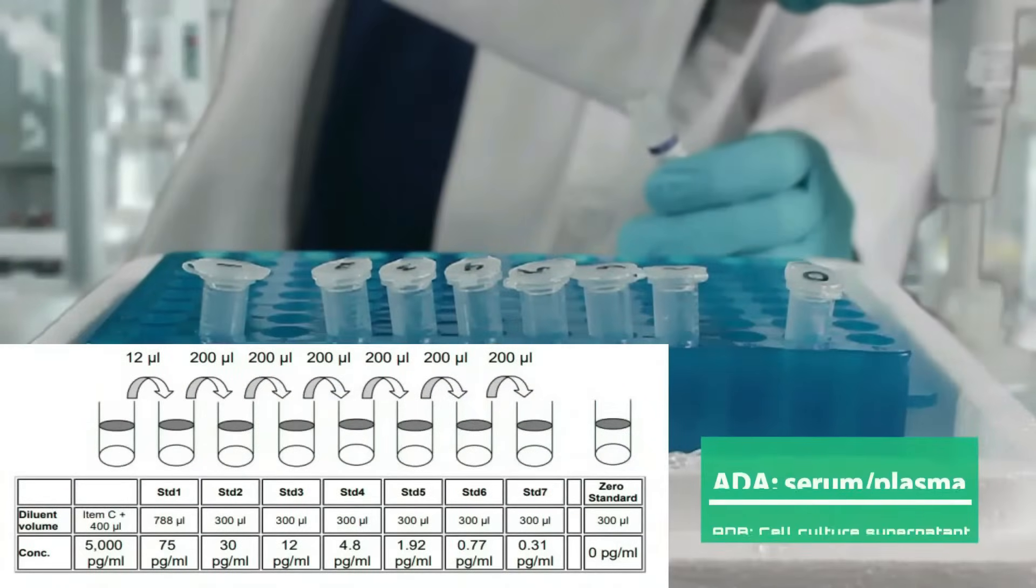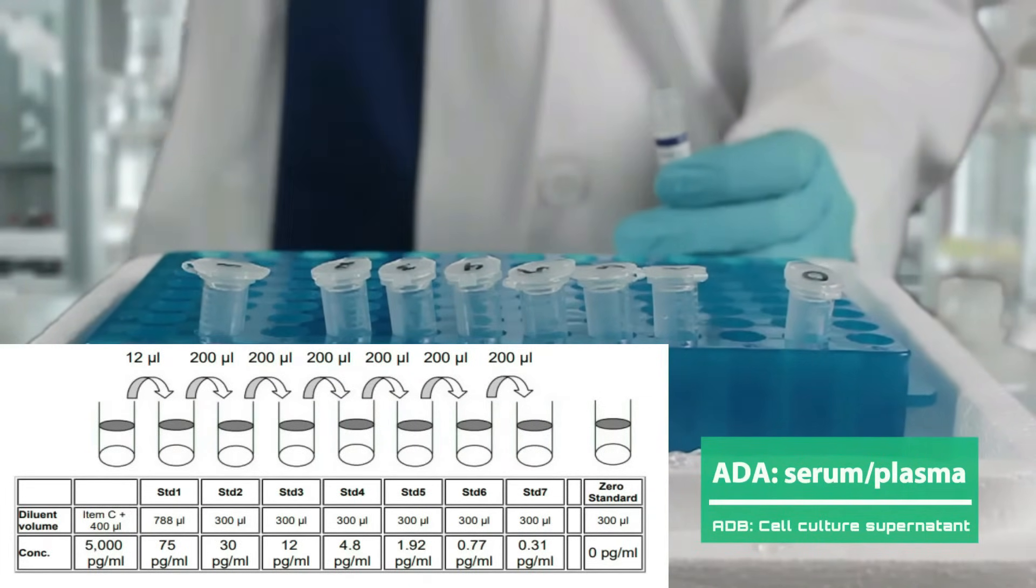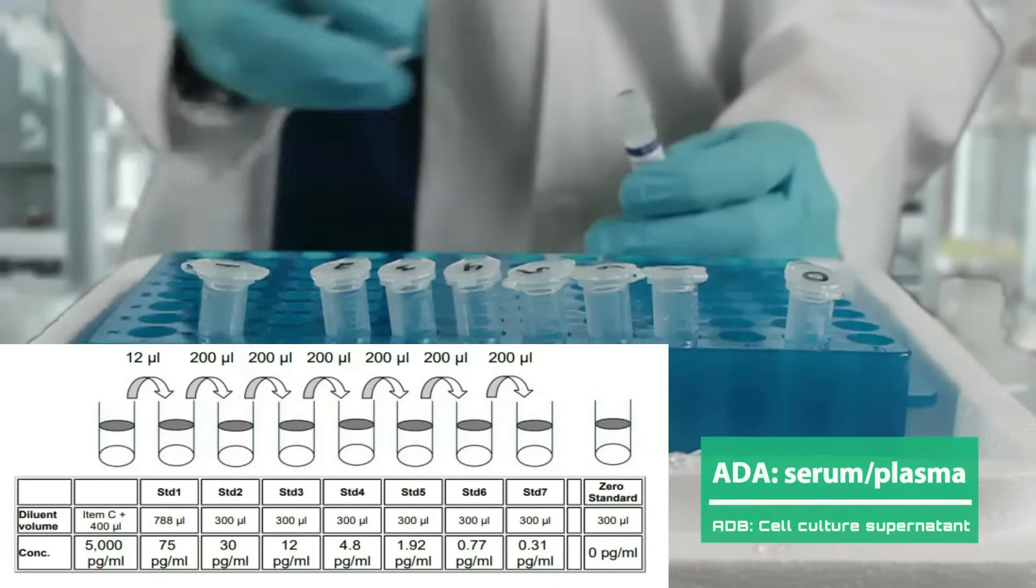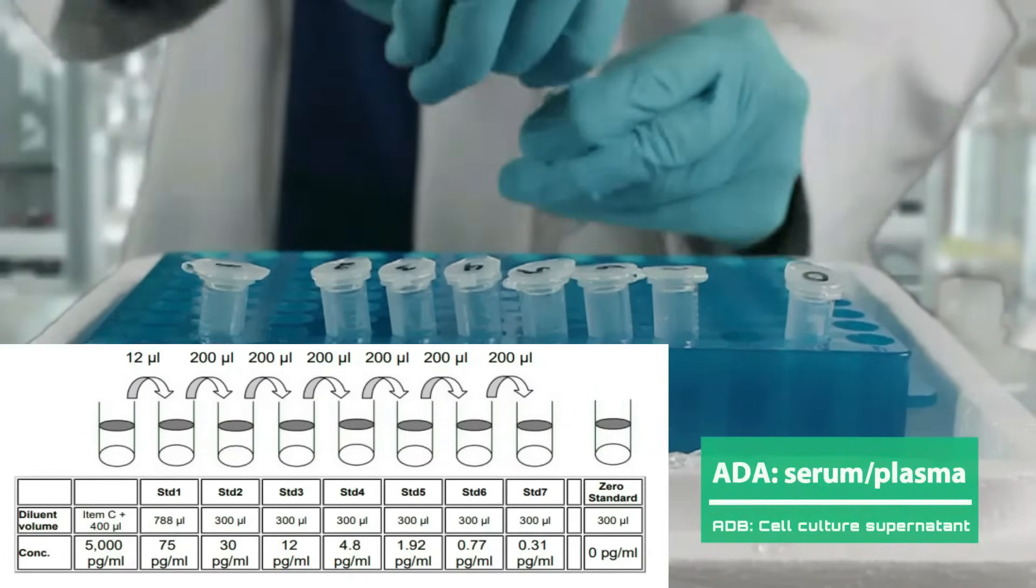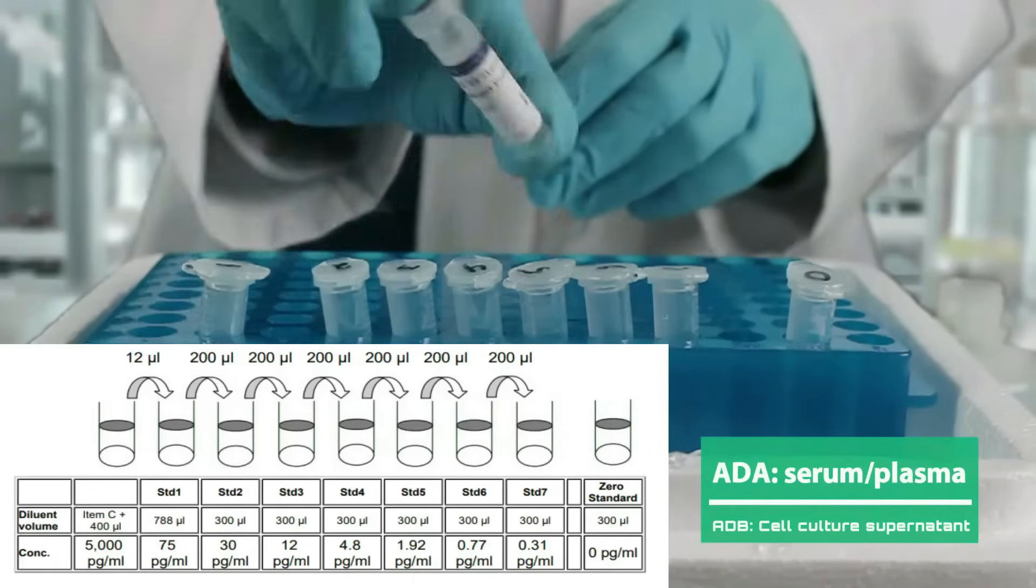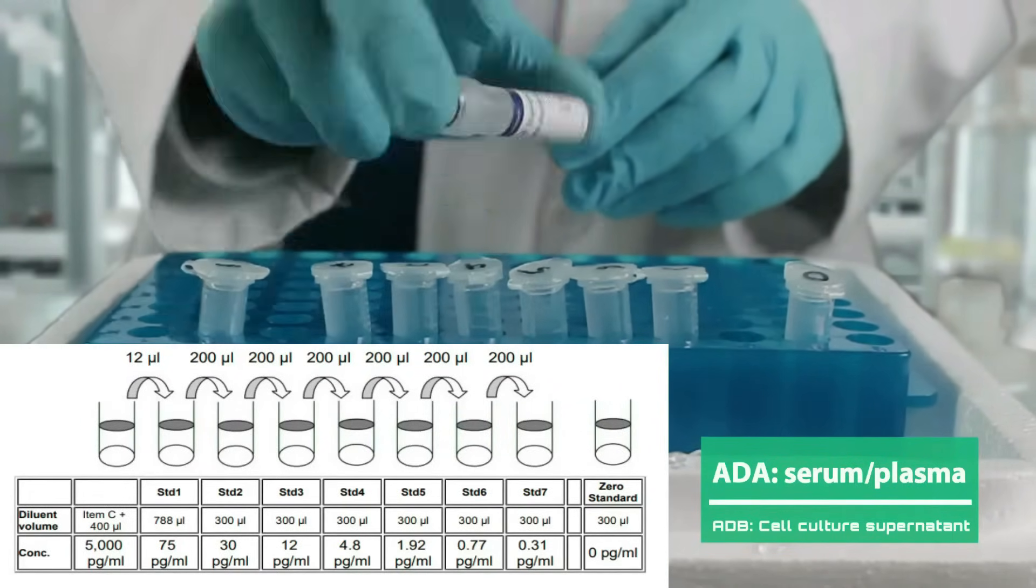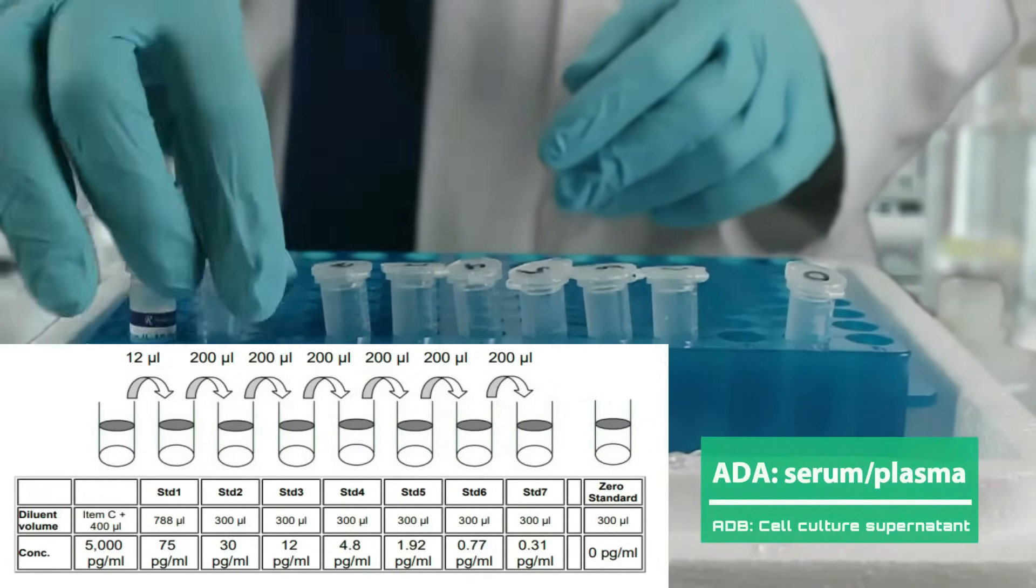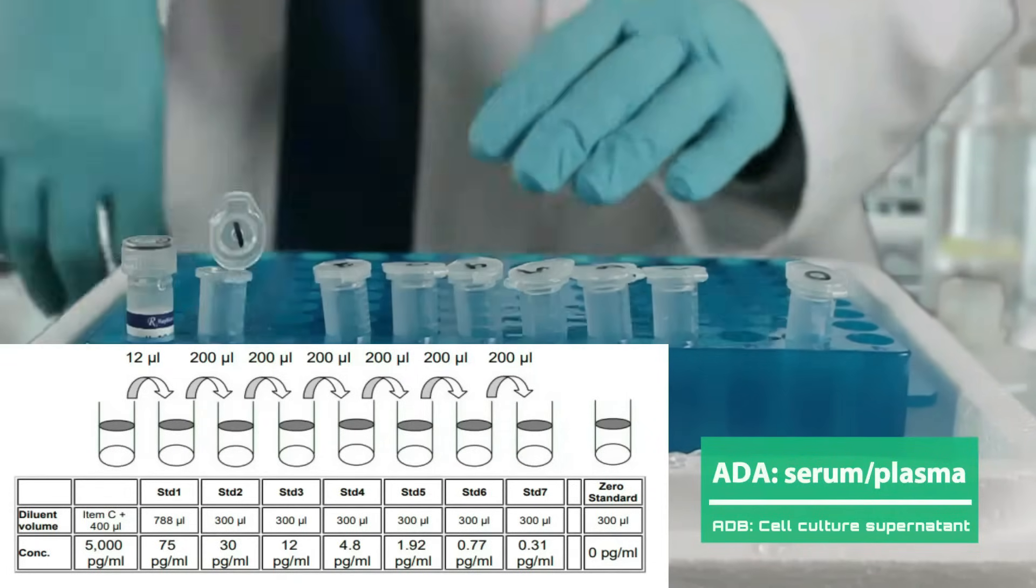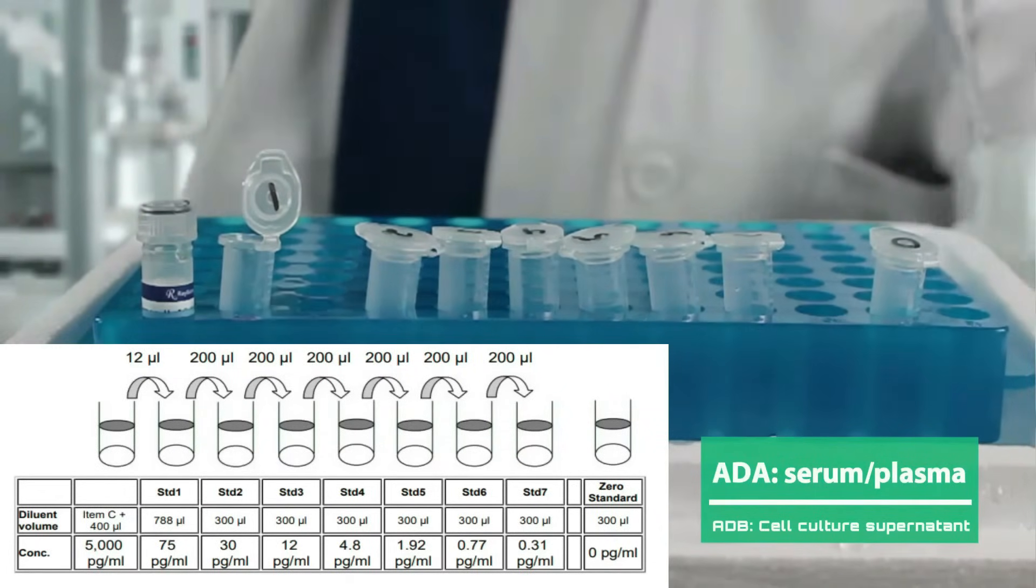Our samples for this demonstration are serum and plasma, so we are going to use ADA as a diluent. If your samples are cell culture, use ADB. Reconstitute the lyophilized mixture with 400 microliters and ensure it is thoroughly mixed in a homogeneous mixture. Next, prepare the tubes with the indicated volumes. For standard 1, add 788 microliters of ADA. In standards 2-7 and the control, add 300 microliters.